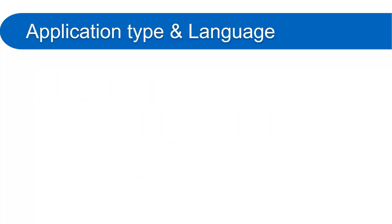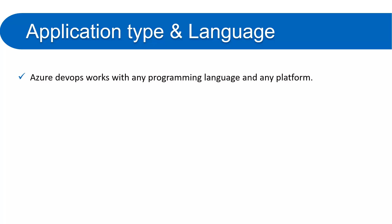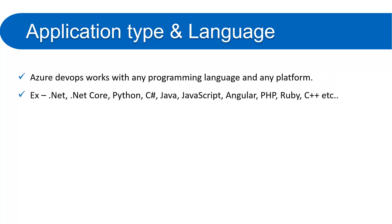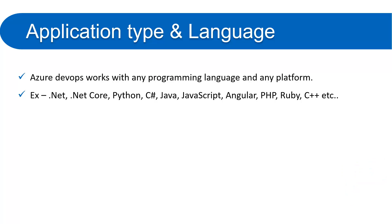Now let's understand what types of applications and programming languages can be used in Azure DevOps. If someone is working on .NET, PHP, Java, or Angular — can they still use Azure Pipelines? Azure DevOps works with any programming language and any platform. You can use .NET, .NET Core, Python, C#, Java, JavaScript, Angular, PHP, Ruby, C++, and more. So if you are working on PHP, do not worry — you can simply use Azure DevOps for building and deployment.